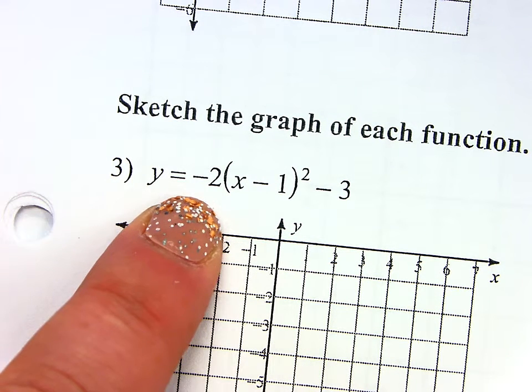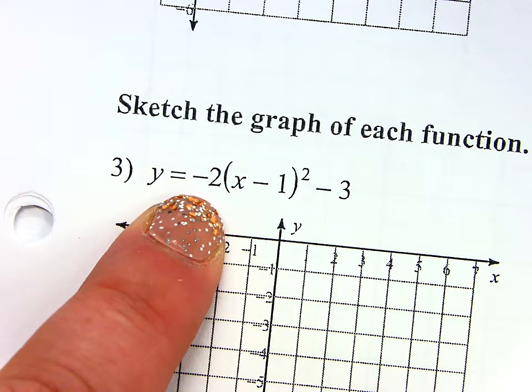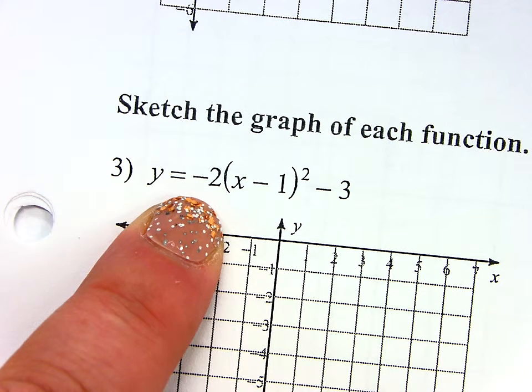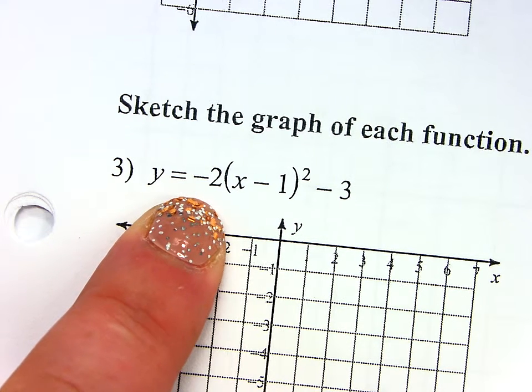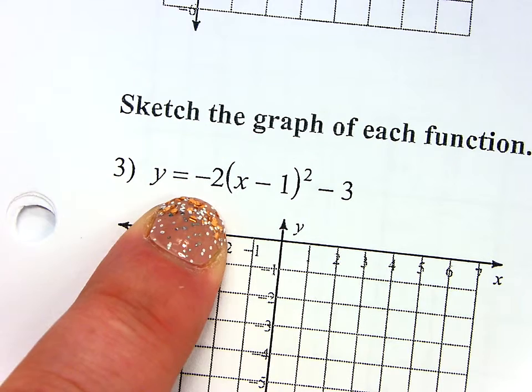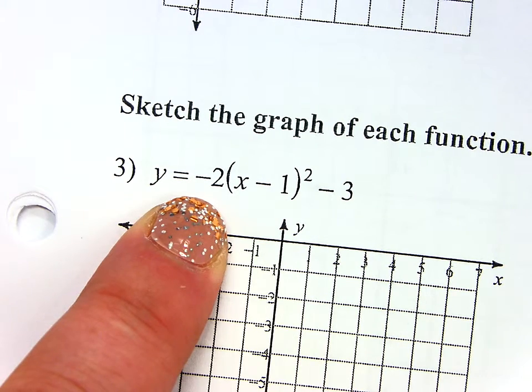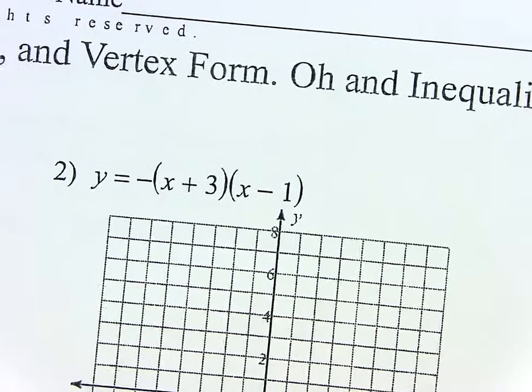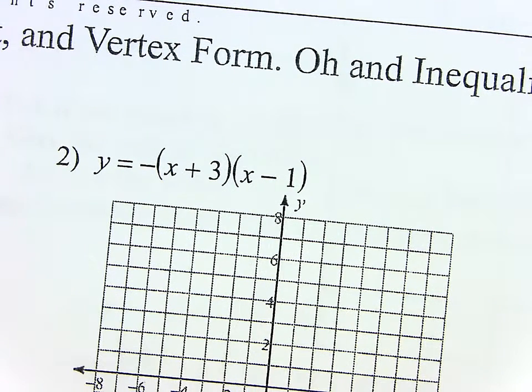The number in the front here is your A value, which is all the same things that it always did: up, down, wide, narrow, how to get from the vertex to the second and third point. However, if you look at something like number two, this doesn't quite look like one of the forms we've looked at, but this sure does look familiar. What does this look like? It's a quadratic that's been factored.